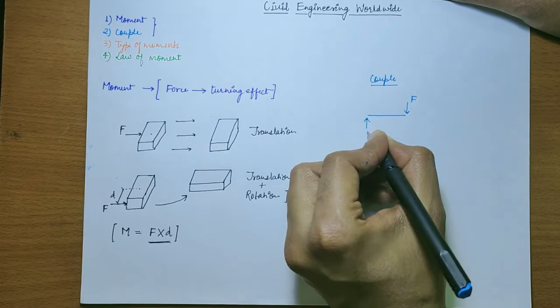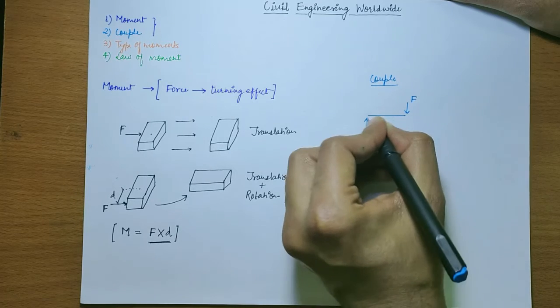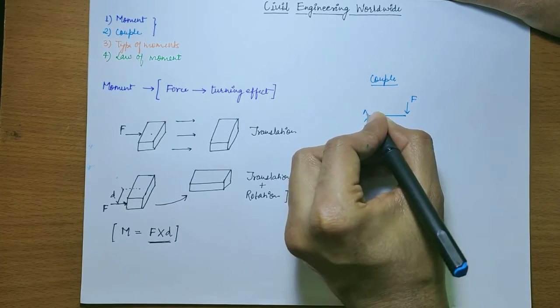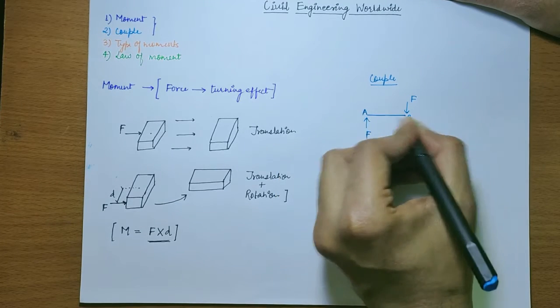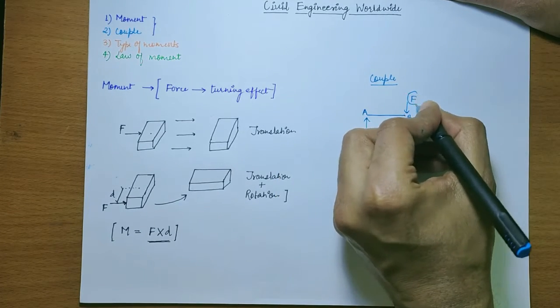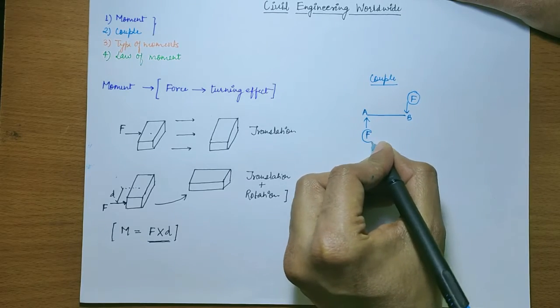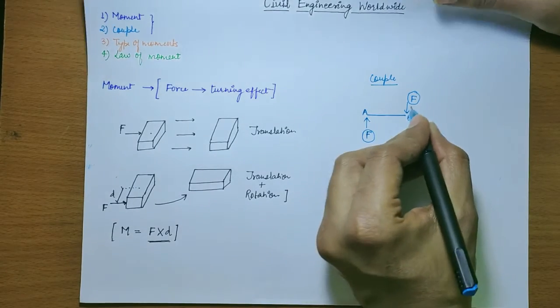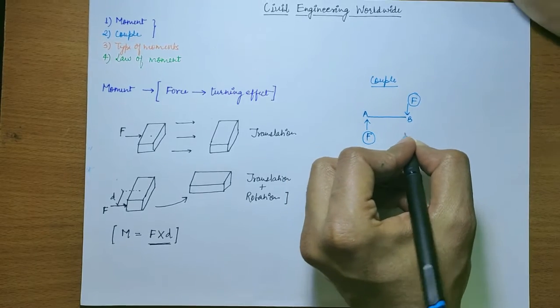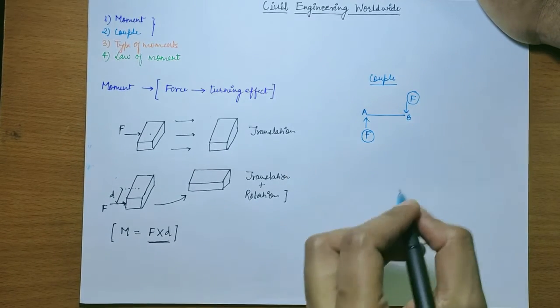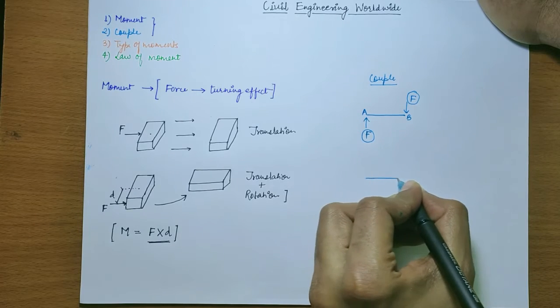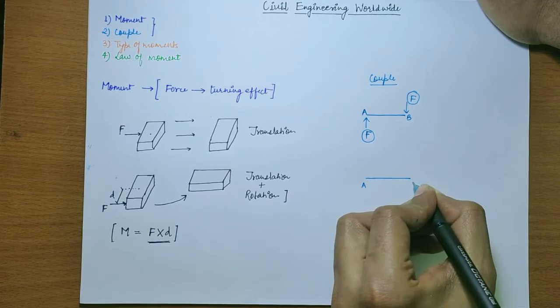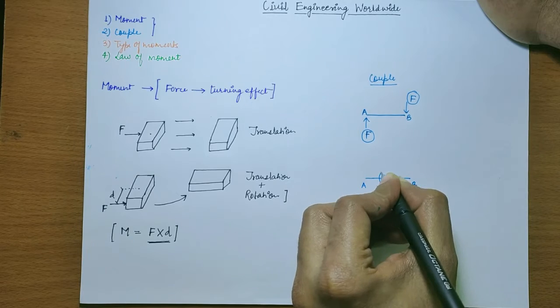So we have a couple of force F here. Here we have an object AB and the force is acting in the opposite direction but it has the same magnitude. Now what this couple of force will have a tendency to do to this object AB is that it will tend to rotate this object AB somewhat like this.